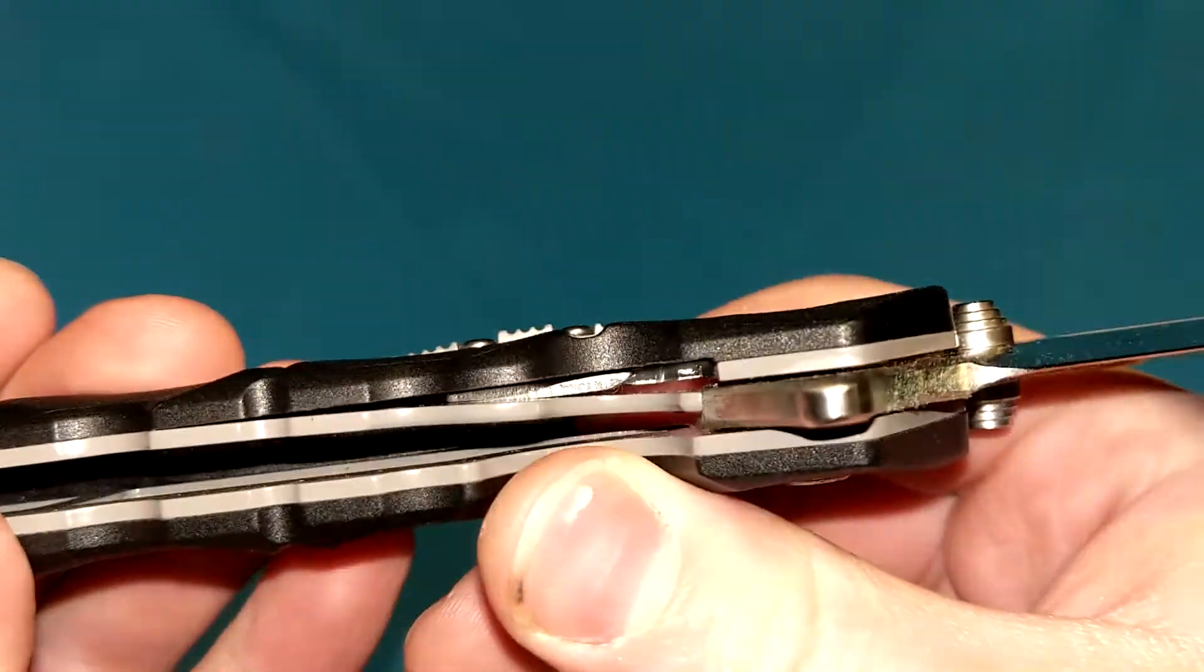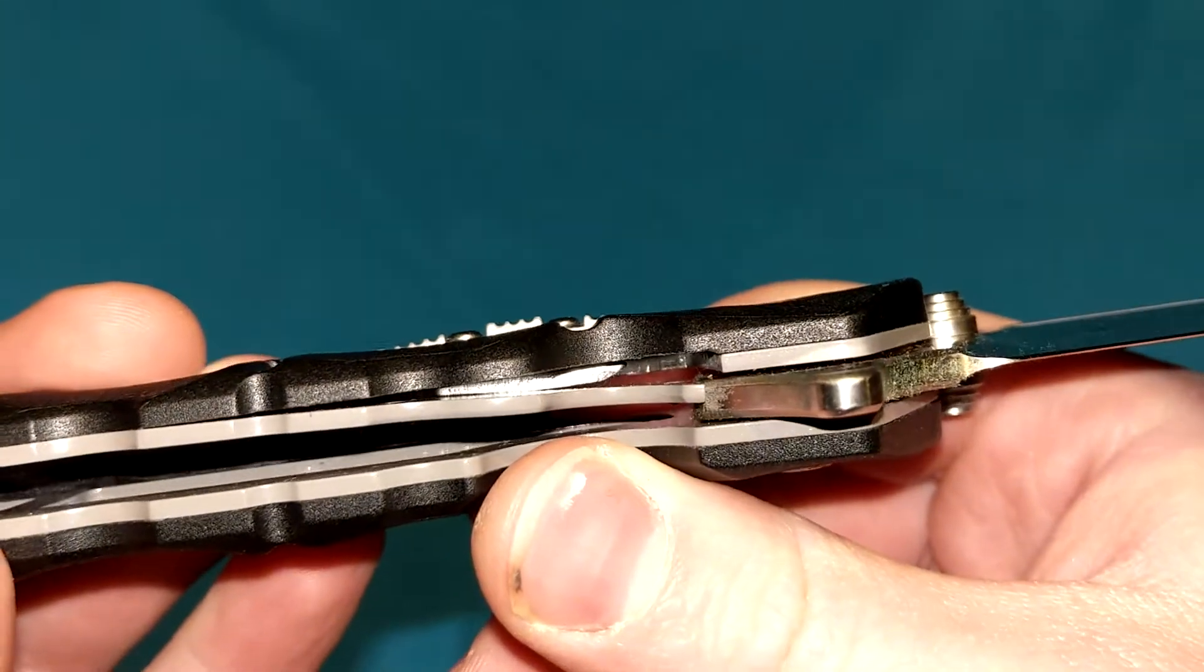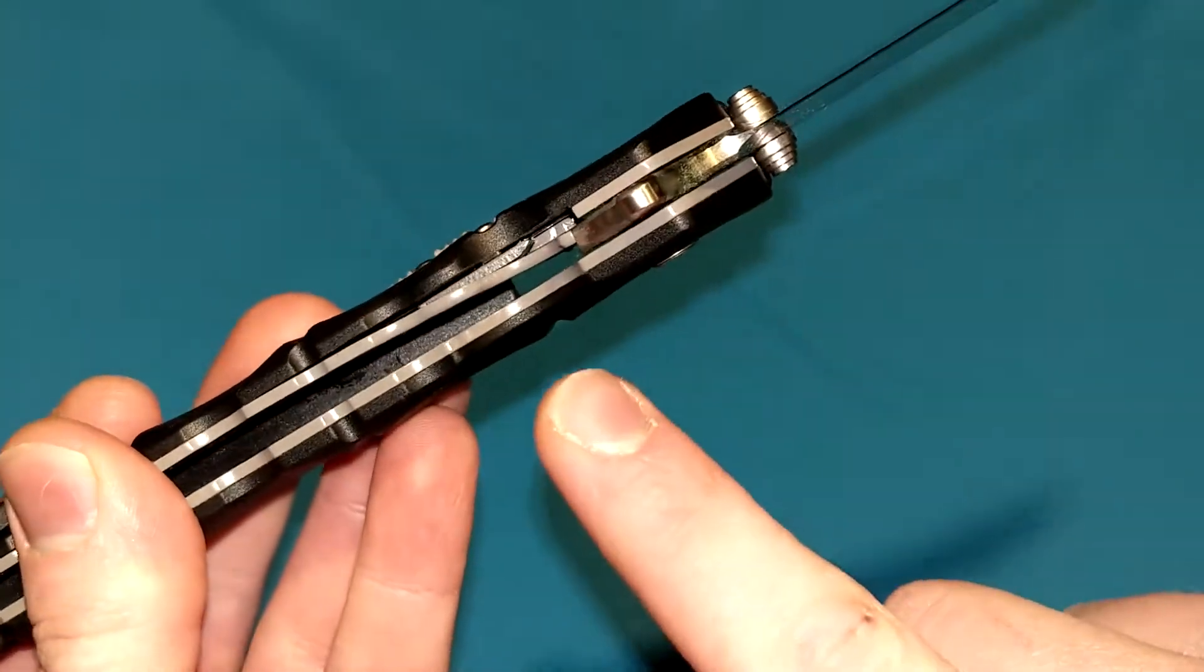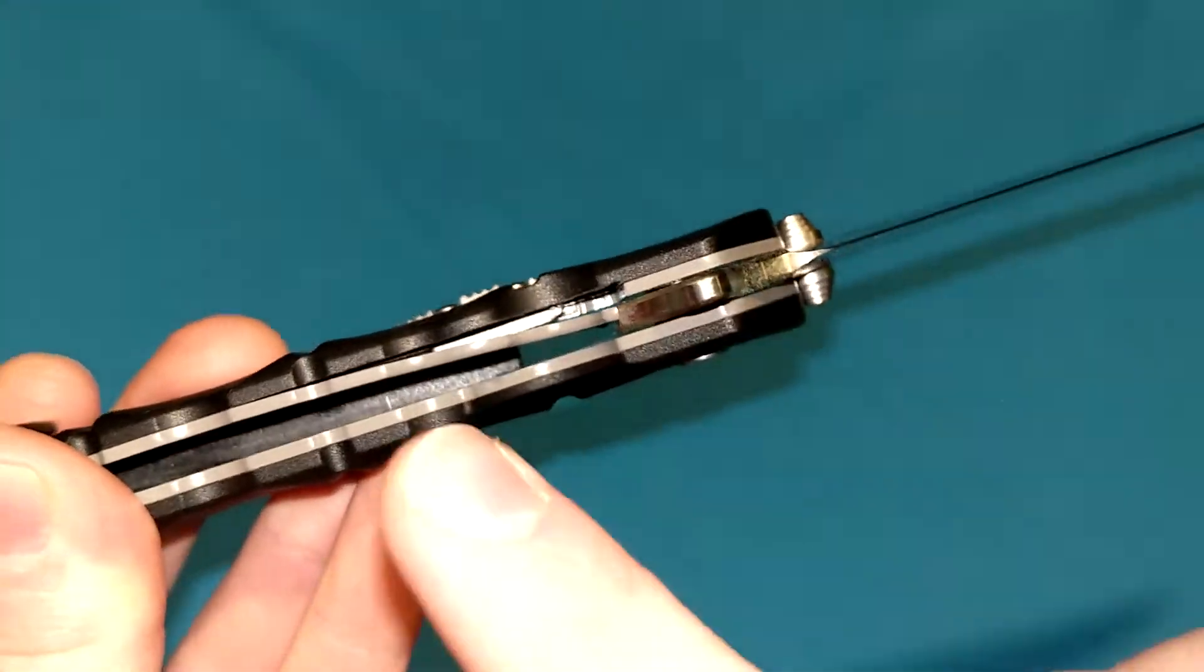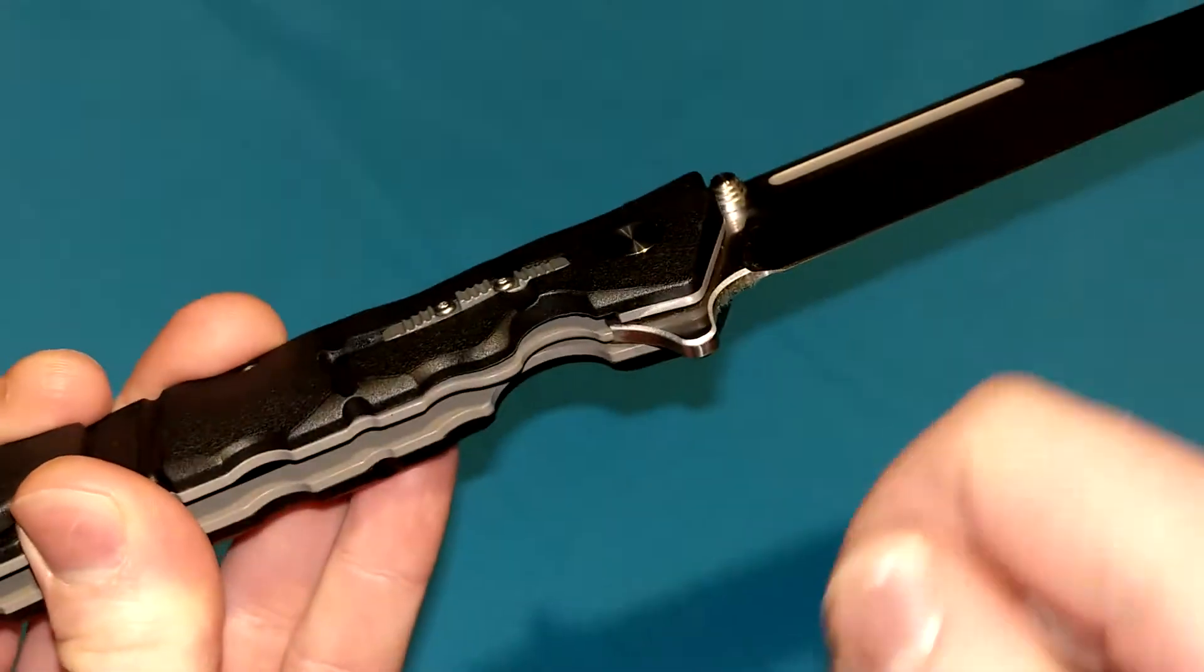If it somehow broke on you, that's how it could disengage on you. That's already assuming the liner is getting stressed out to the point that it's actually moving in that much to break the lock for the lock.